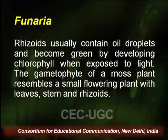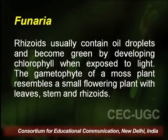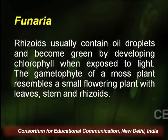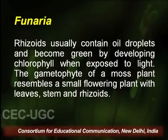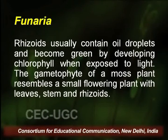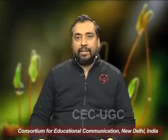The rhizoids usually contain oil droplets and become green by developing chlorophyll when exposed to light, indicating the potential of each cell to give rise to a new plant. The gametophyte of a moss plant resembles a small flowering plant with leaves, stem, and rhizoids.